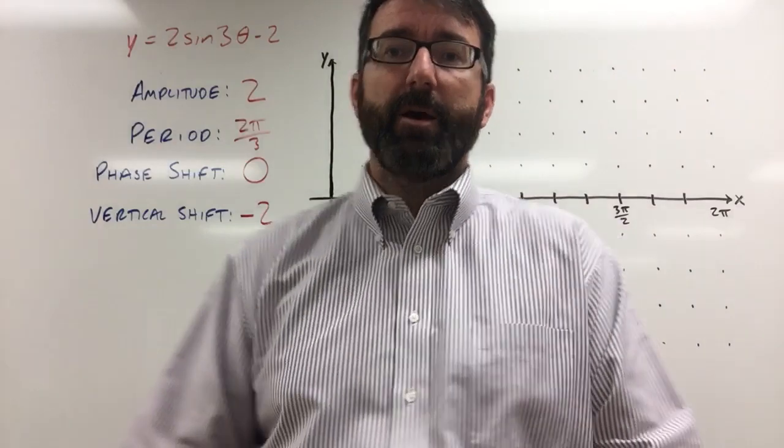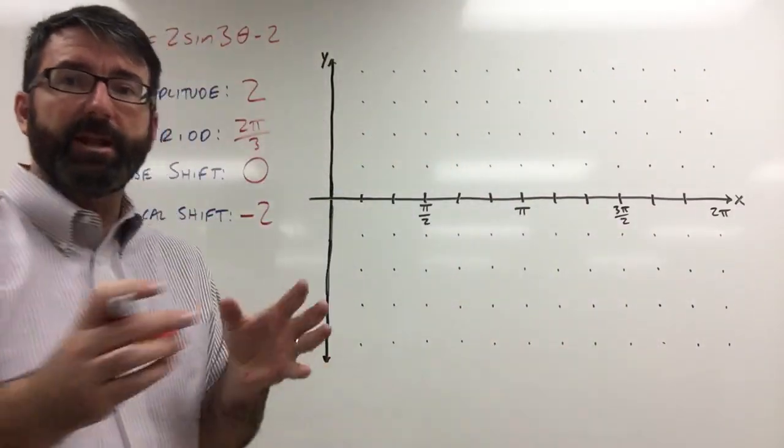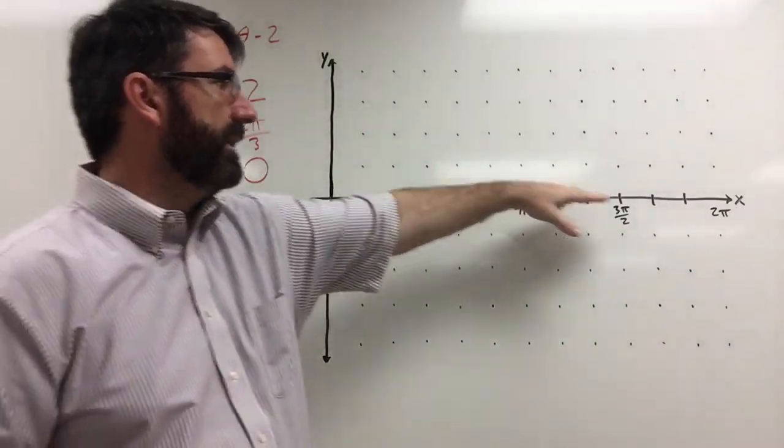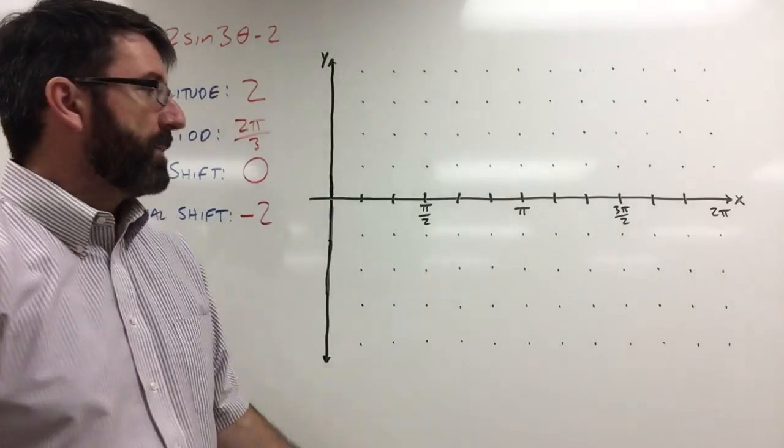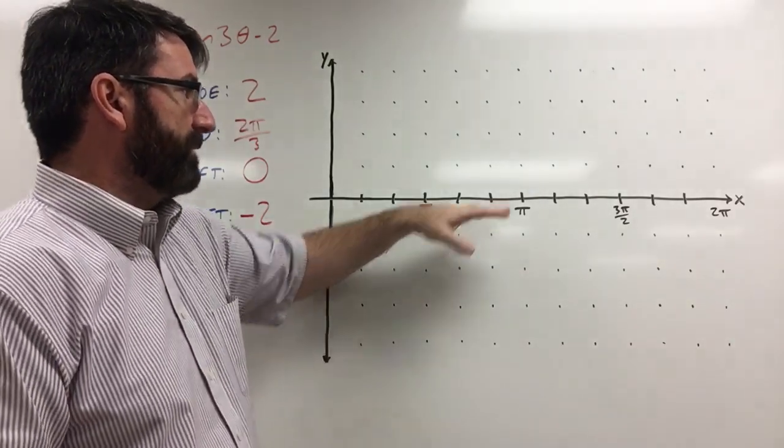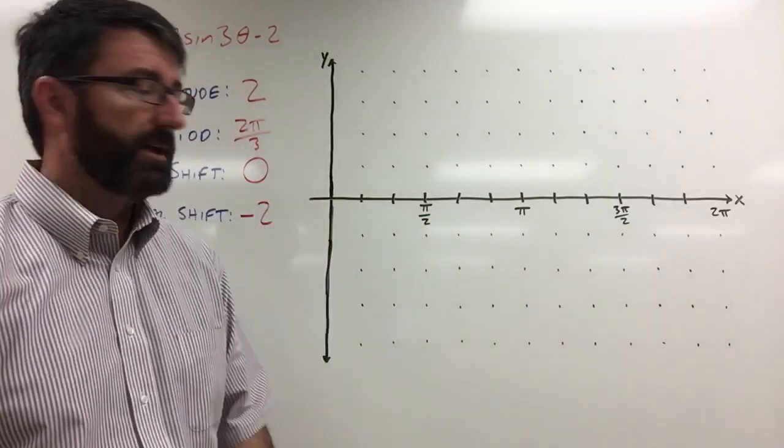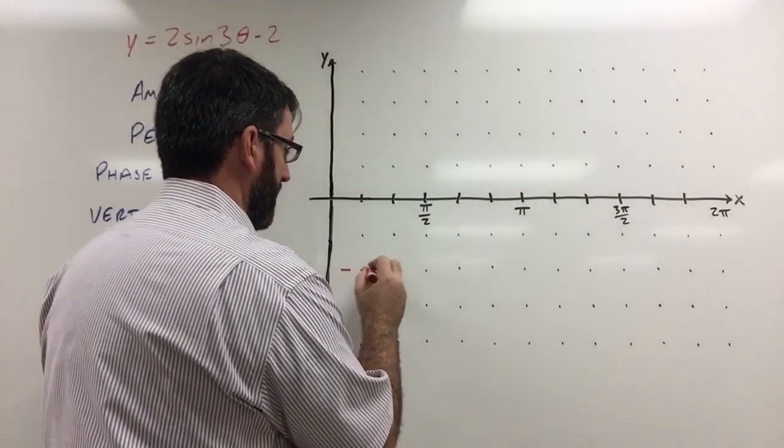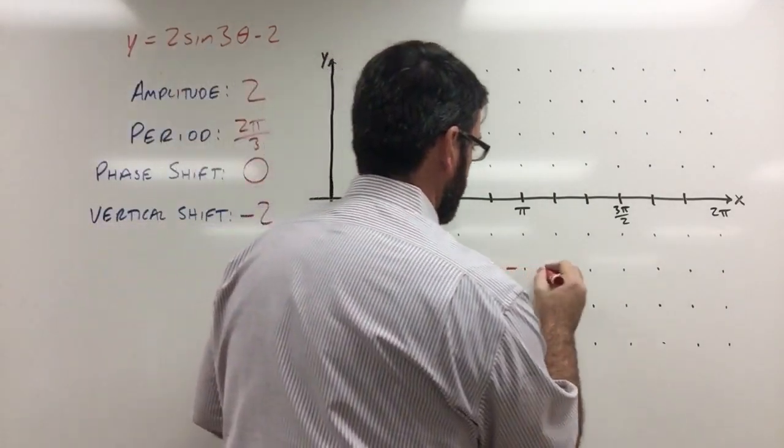All right, now let's graph it. We're going to start with our midline. The midline for a sine function is normally right on the x-axis. But we're going to shift it down 2, and so our midline is going to be here at y equals negative 2.